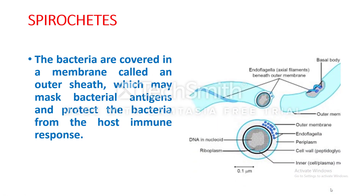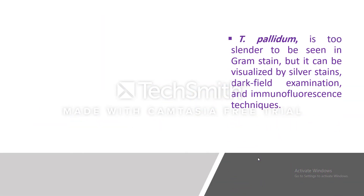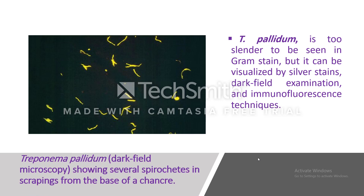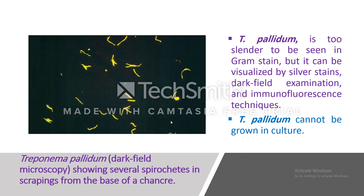These bacteria are covered by a membrane called the outer sheath, which may mask bacterial antigens and protect the bacteria from the host immune response. Treponema pallidum is too slender to be seen on Gram stain, but it can be visualized by silver stain, dark field examination, and immunofluorescent technique. This is a dark field examination of spirochetes scraped from the base of a chancre. Treponema pallidum cannot be grown in culture.